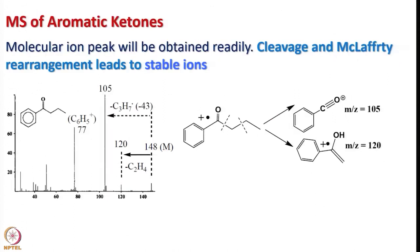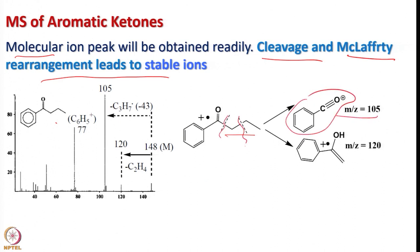Now let us look at the mass spectra of aromatic ketones. The molecular ion peak will be obtained readily. Alpha-cleavage and McLafferty rearrangement lead to stable ions, provided we have a longer carbon chain on the carbonyl group. For example, considering this species, two possibilities exist: cleavage can give m/z 105, or m/z 120. The molecular weight is 148; loss of ethylene gives 120, and loss of a C3H7 radical gives 105. These two are identified from the mass spectrum.